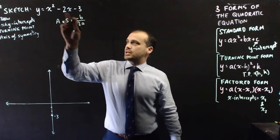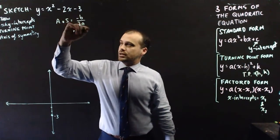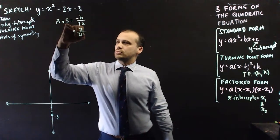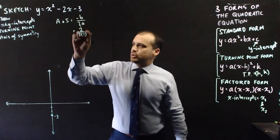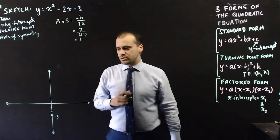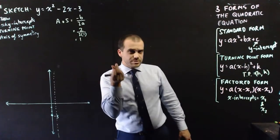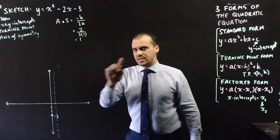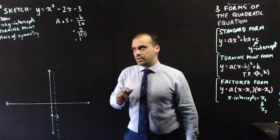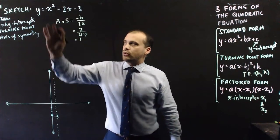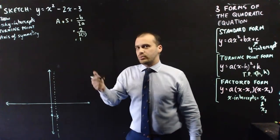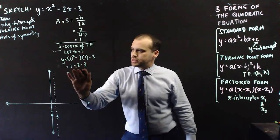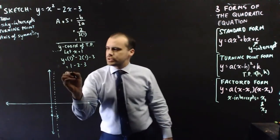In this case, negative b is negative negative 2, so that's going to be positive 2 over 2 times 1. 2 over 2 is 1, so my axis of symmetry is 1. The axis of symmetry is the x-coordinate of the turning point, so if I sub 1 in for x I'll know the y-coordinate. When I sub 1 into my quadratic I get 1 minus 2 minus 3, which is minus 4.